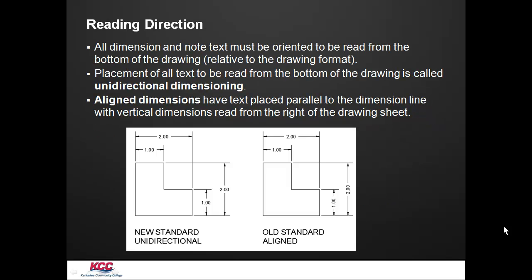Our reading direction is known as unidirectional. Unidirectional means that all text is read from the bottom of the drawing. On the left here, you can see we have unidirectional. Each piece of text is read from the bottom of the drawing.